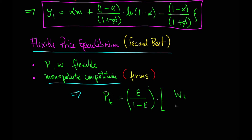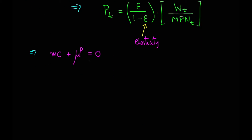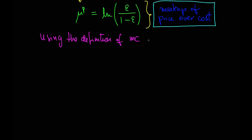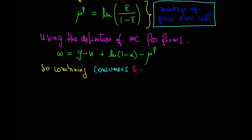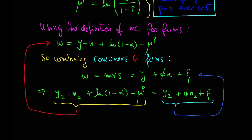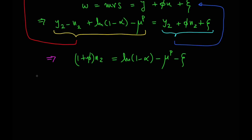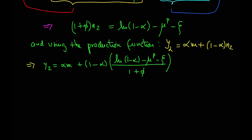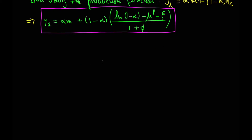The optimal price setting rule here is that P is equal to the marginal cost, including the markup — the price of the cost associated with the elasticity of the demand curve. So let's find now the equilibrium, using the definition for the marginal cost of firms and the marginal rate of substitution for consumers. We find the equilibrium using the production function, and we can get the level of Y2.